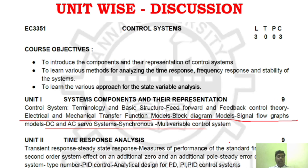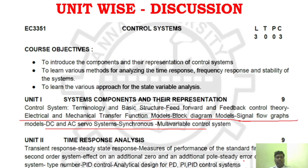Unit 2 is Control System time response. Key areas include PID control system problems, mostly steady-state problems, closed-loop and open-loop transfer functions, second-order system analysis, steady-state error constants, and PID controller problems. These are the key areas in Unit 2.